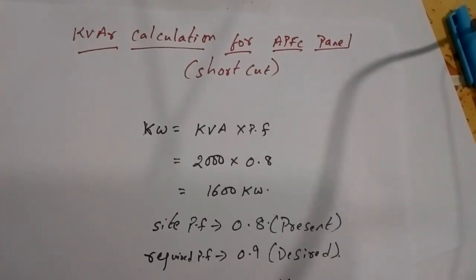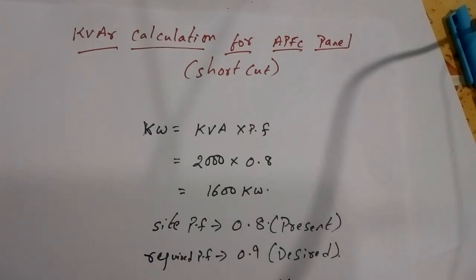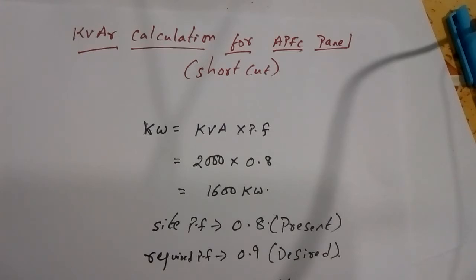Good morning friends. In this video I'm going to explain how the APFC panel calculation is done in a simple step. Generally using this step you can easily know that the capacitor bank installed at site is good enough to increase the power factor from 0.8 to 0.9 or to the required level. In an earlier video I explained the step-by-step procedure to calculate the capacitor bank.